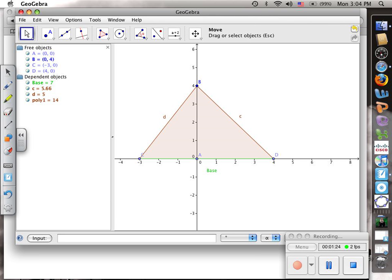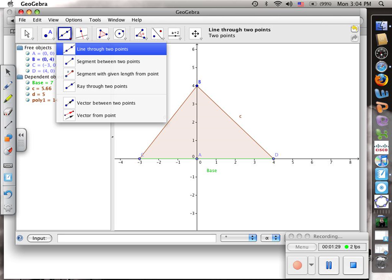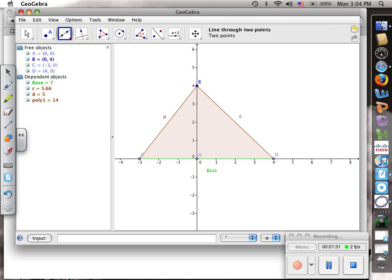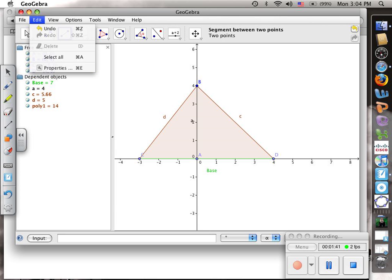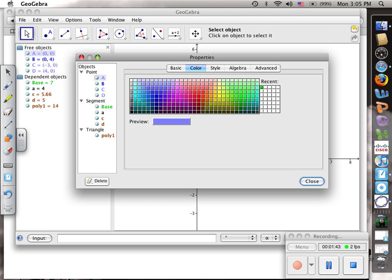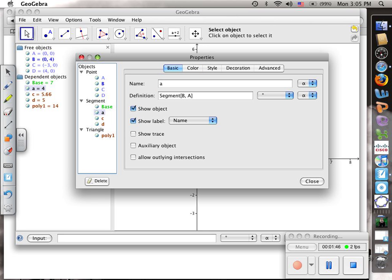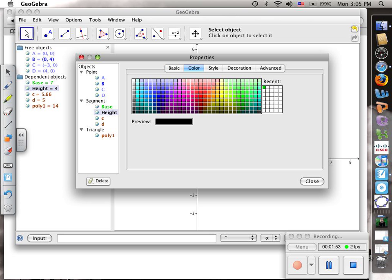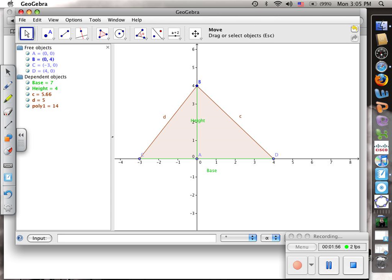Move that label down there, and then let's add a segment to be our height. We want a segment between two points from point b to point a, and that gives us segment a here. Let's edit the properties of segment a. We'll rename that one height and make it green as well. Close that and move the label over.